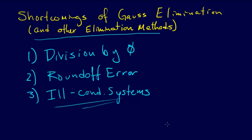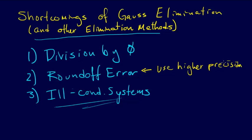It's not really fair to talk about the shortcomings of elimination methods unless we talk about some of the ways we can avoid those shortcomings. The first thing to mention regarding round-off error is we could just use higher precision. As discussed in the previous chapter, that is the only general remedy for problems with round-off error — if you just use higher precision it will help across the board. There are other tricks too, like scaling.